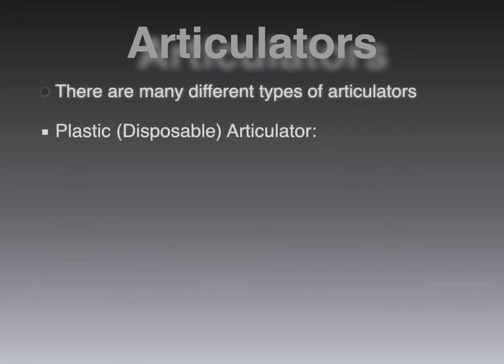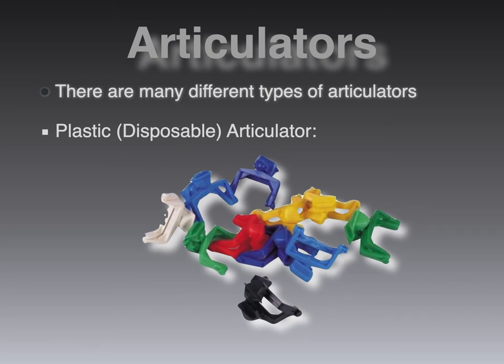First, we talk about a very common form of articulators: hinge articulators. The ones visualized here are the plastic disposable articulators. These are used with stone model bases and are very common for small quadrant trays, meaning that the impressions have only captured a quadrant of the mouth. But even these disposable plastic hinge articulators can also be used for full arch models.